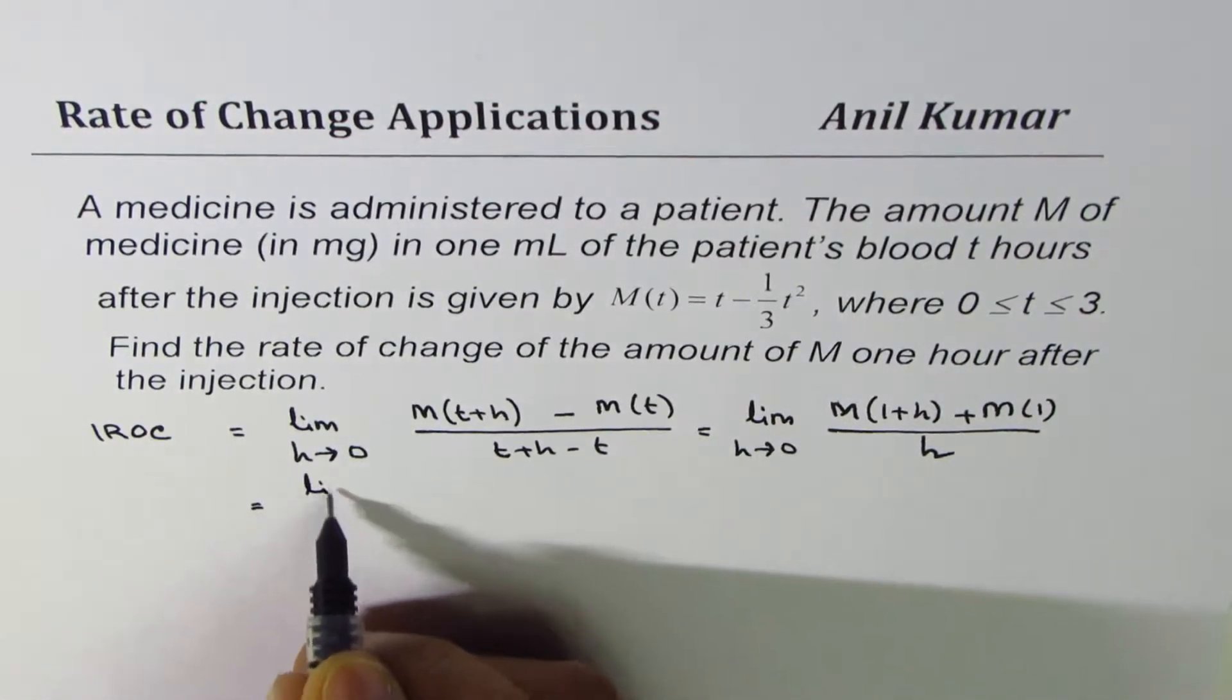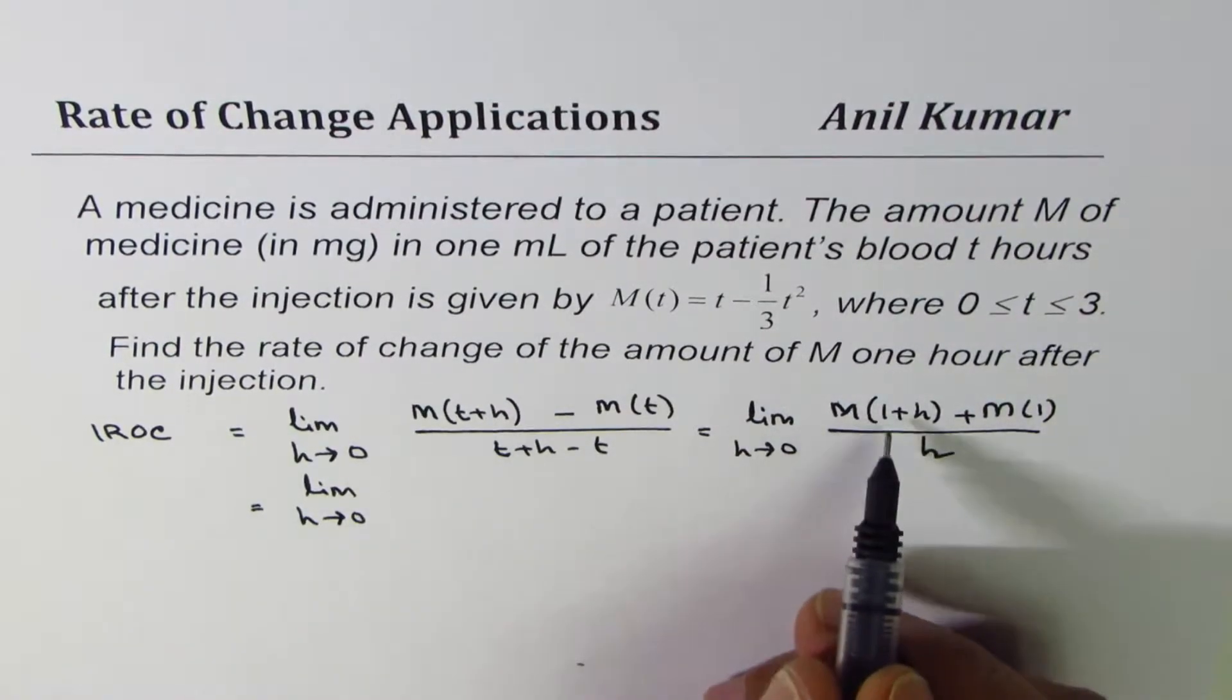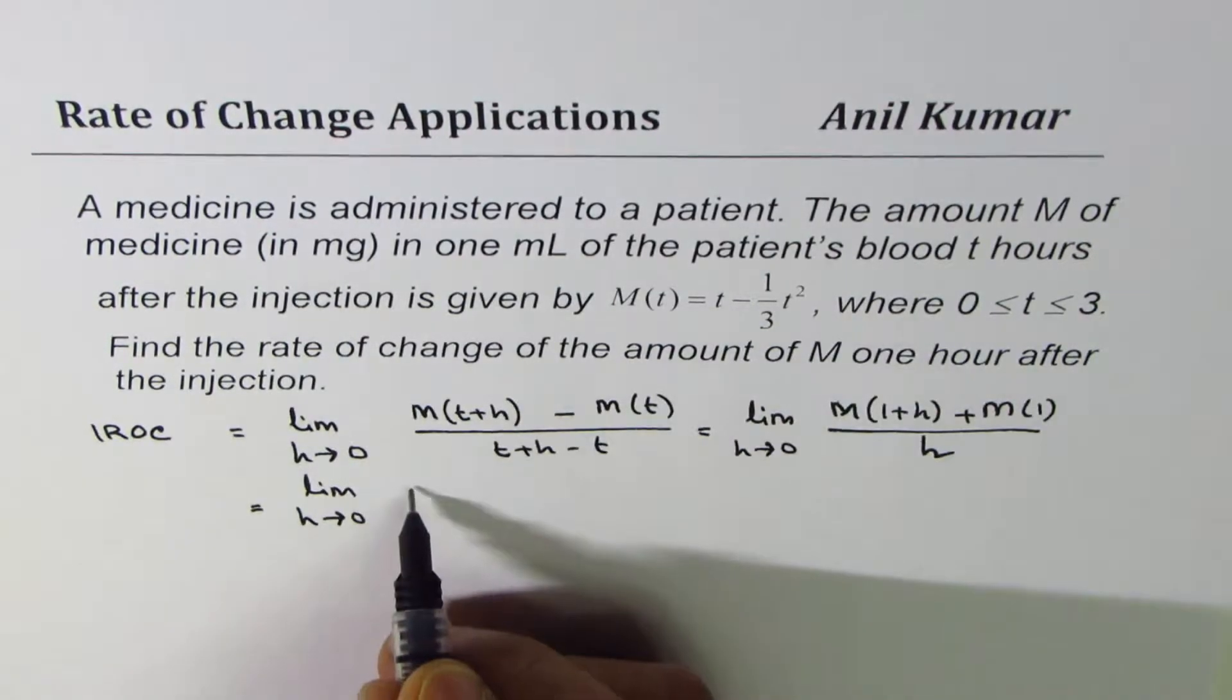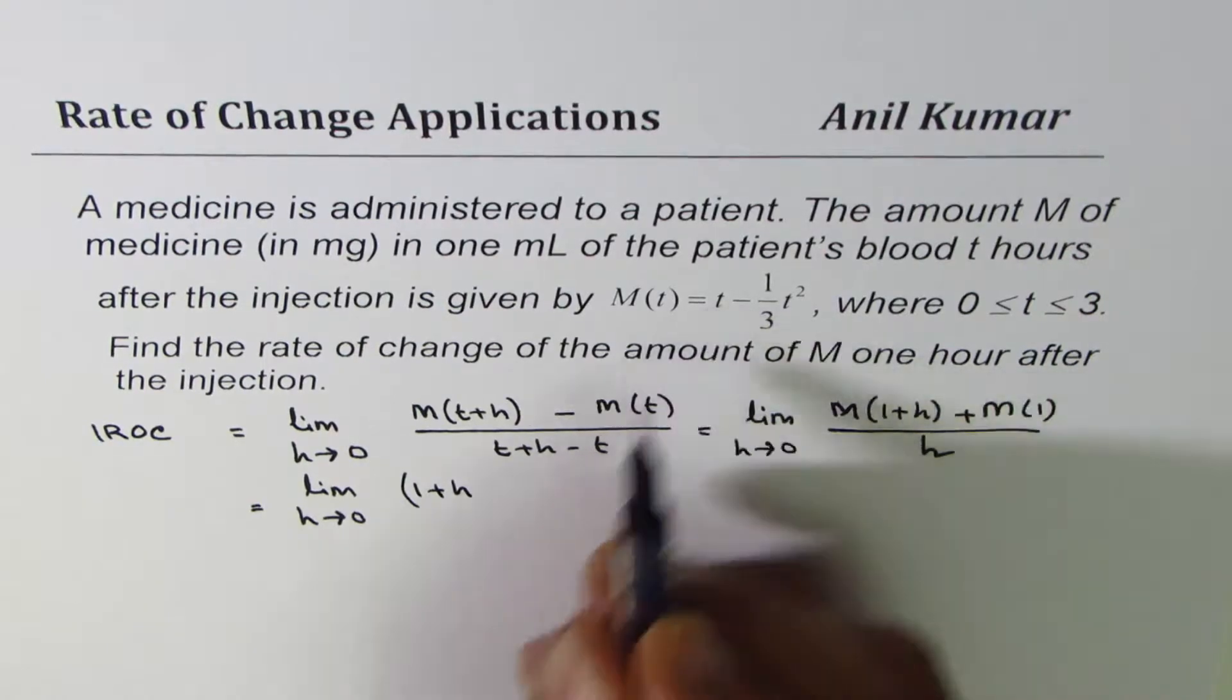It could be limit h approaches 0. When I say M(1+h), it means I have to replace t by 1+h. So I get 1+h, this is for the first t, right?